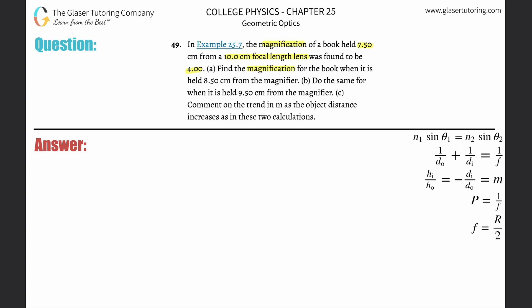Letter A: Find the magnification now for the book when it is held 8.5 centimeters from the magnifier. So it basically turns out that the information before, none of it really is relevant except for the focal length. The reason is because the focal length is an inherent property of the lens itself. It's not going to change.